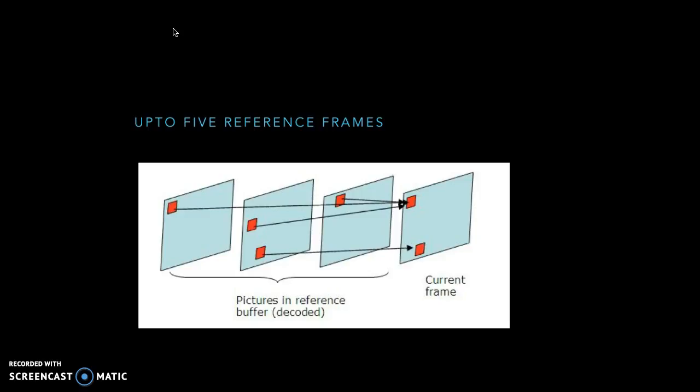P-frame is a forward predicted frame. B-frame is a bidirectional predicted frame. You could have only one reference frame in the case of P-frame and a pair of reference frames for B-frame. But in H.264, you have the ability to have up to five reference frames.